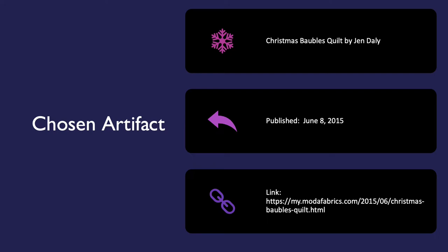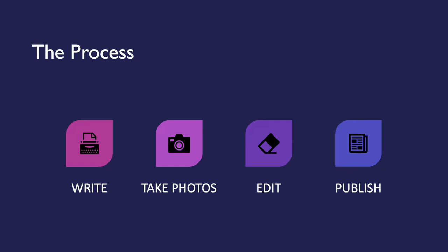The blog post was titled 'Christmas Baubles Quilt' by Jen Daily, published June 8, 2015. It was an informative and instructional article. This frame is all about the process of creating information, and the process for this article was: write the article, take photos, edit, and publish — four parts we'll discuss in depth.